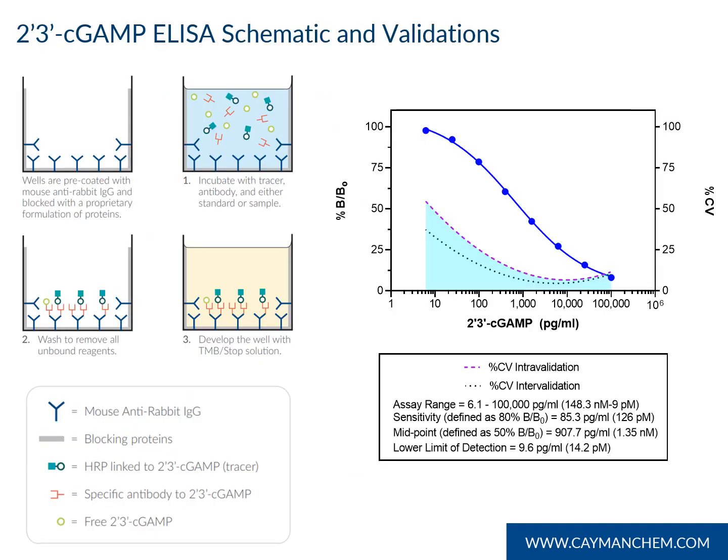2-3 cGAMP ELISA schematic and validations. This is our current assay format, which is quite typical for small-molecule competitive ELISAs. We use a mouse anti-rabbit capture plate, then tracer, antiserum, and standard or samples are added to the wells, incubated, washed, and developed. After identifying a suitable antiserum and tracer combination, considerable time was spent to assure the finished ELISA met performance criteria. The graph is a compilation of numerous buffer validations, and as you can see, the assay has a wide dynamic range and is very sensitive.